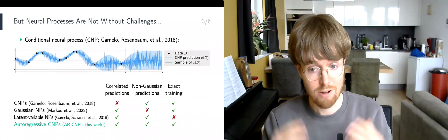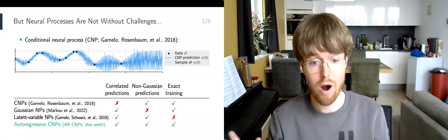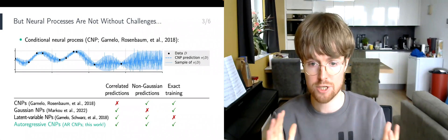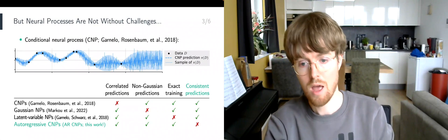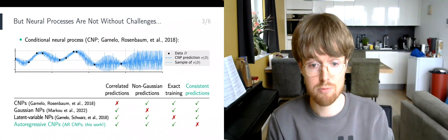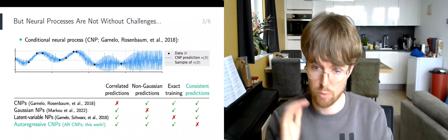ARCNPs produce correlated non-Gaussian predictions and do not require approximations. Unfortunately, there is no free lunch. What ARCNPs give up is the property of consistent predictions, and we'll come back to this shortly.